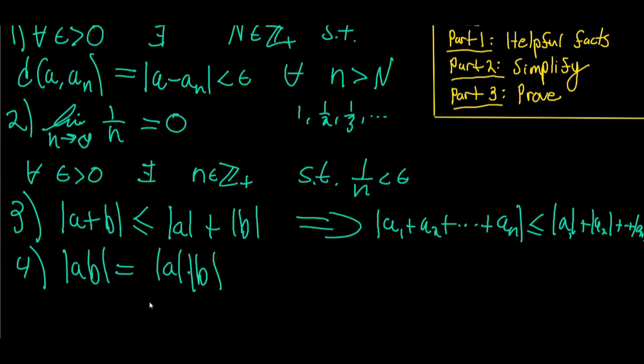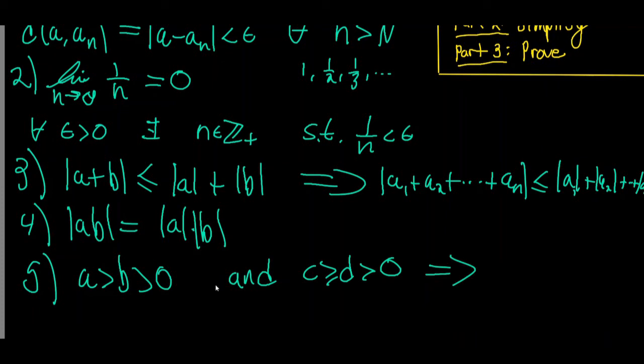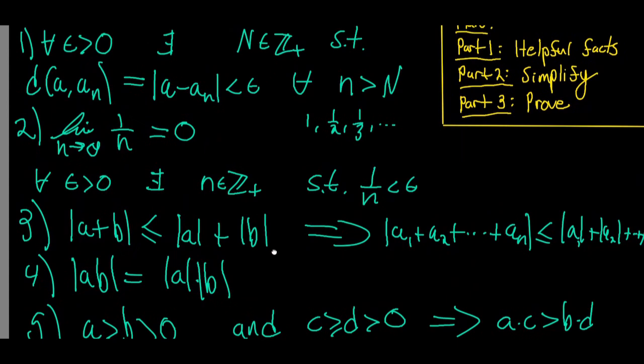Helpful fact 5: If a is strictly greater than b, and b is strictly greater than zero, and c is greater than or equal to d, and d is strictly greater than zero, then this implies that a times c is strictly greater than b times d. I have a separate video linked in the description with the proof of this fact. These facts will be useful for our simplification process in part two.